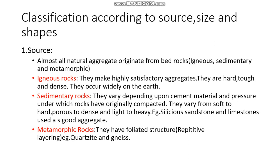When that parent rock undergoes weathering and disintegration — because of the heat of the sun, rain, or wind — it breaks apart and disintegrates. It then becomes different kinds of aggregates: either sand, small boulders, pebbles, or gravels. There are mainly three types of bed rocks: igneous, sedimentary, and metamorphic.